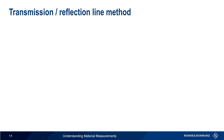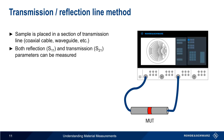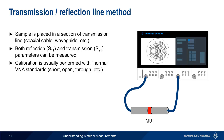The first method we'll discuss is the transmission reflection line method. In this method, the sample or material under test is placed in a section of transmission line — this could be a coaxial cable, a waveguide, a microstrip line, etc. Because we connect our VNA to both ends of the transmission line, we can make both reflection or S11 and transmission or S21 measurements of the material. This method is also relatively easy to calibrate, since calibration is usually performed with the normal VNA calibration standards, such as short, open, through, etc.